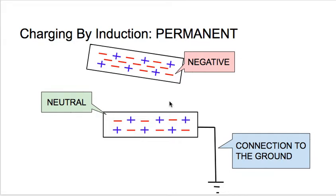The fourth type of charging is charging by induction resulting in a permanent charge. This is very similar to charging by induction resulting in a temporary charge, in the sense that these objects do not need to come into contact with each other — just one has to get close to the other. The difference is that we have a connection to the ground, and you're going to see in a second why that's so important.